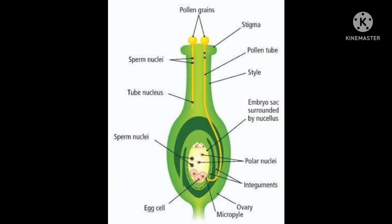Now we'll learn about fertilization. The definition: after unsuccessful pollination, the pollen grain grows a tube with the help of the style to reach the ovary, and then it is fused. This complete process is called fertilization. In fertilization, the pollen grain — which is the male part — travels to the female part, which is the ovary.